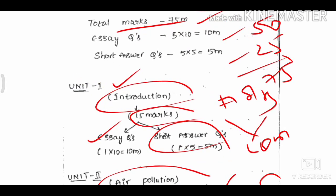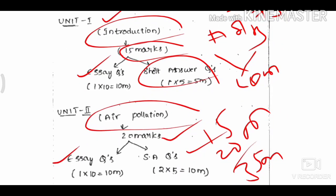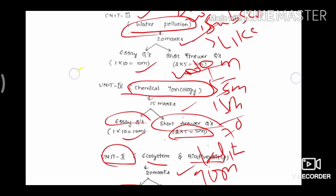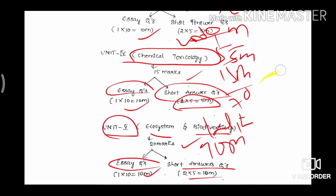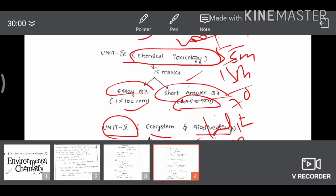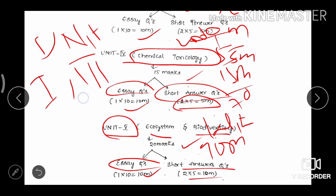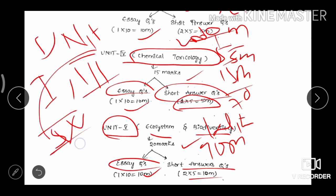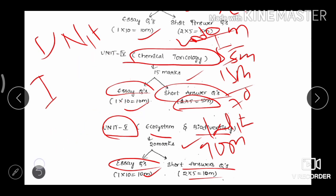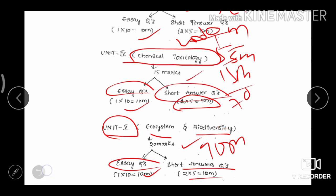To summarize: Unit 1 is 15 marks, Unit 2 is 20 marks, Unit 3 is 20 marks, and Unit 5 is 20 marks. Focusing on these three or four units gives you approximately 60 marks, which is easy to target.